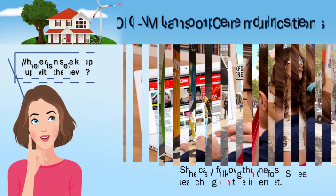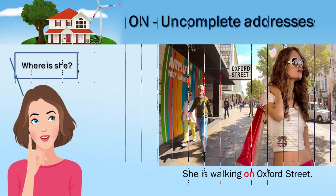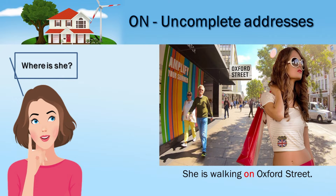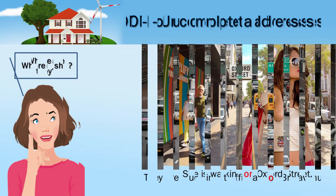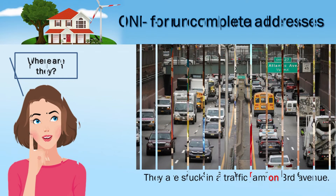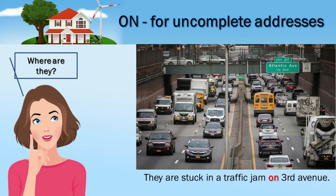On — incomplete addresses. Where is she? She is walking on Oxford Street. Where are they? They are stuck in a traffic jam on 3rd Avenue.